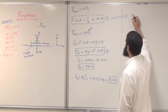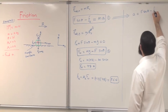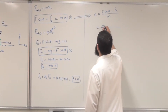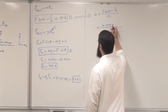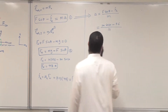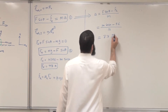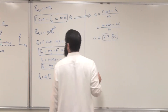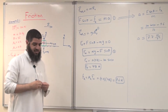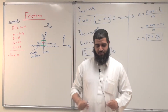Now I can solve for acceleration: a = (f cosine theta − fk) / m = (100 cos 30° − 9.6) / 10. The magnitude of the acceleration is 7.7 m/s², directed to the right. This completes our second example related to the presence of friction in motion problems.